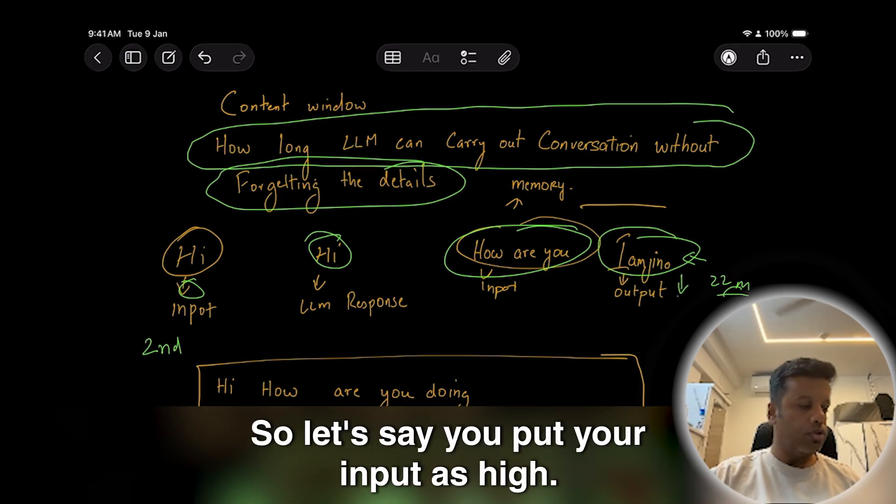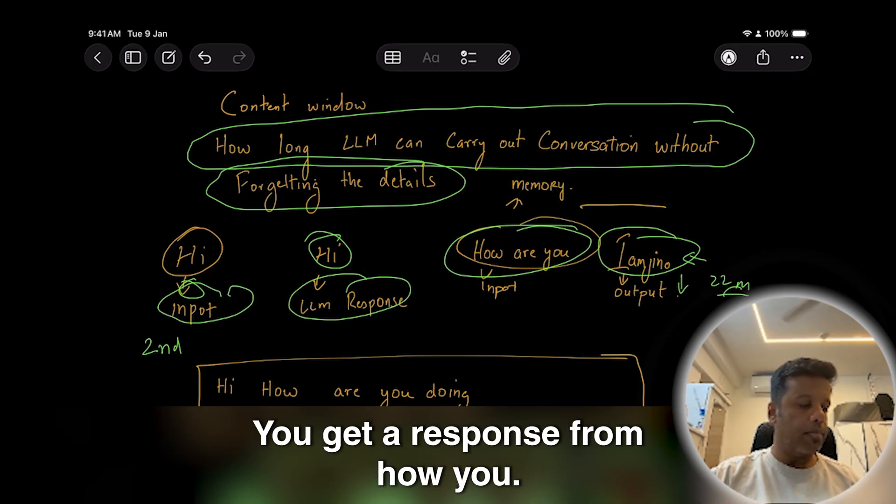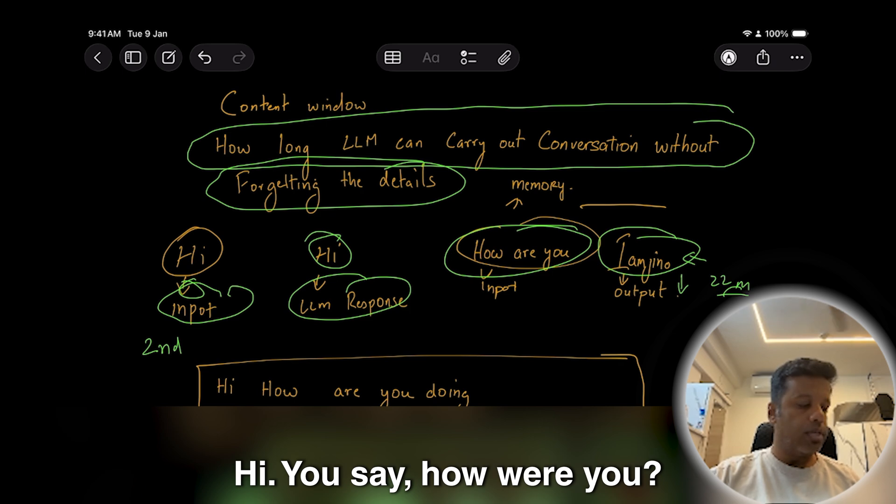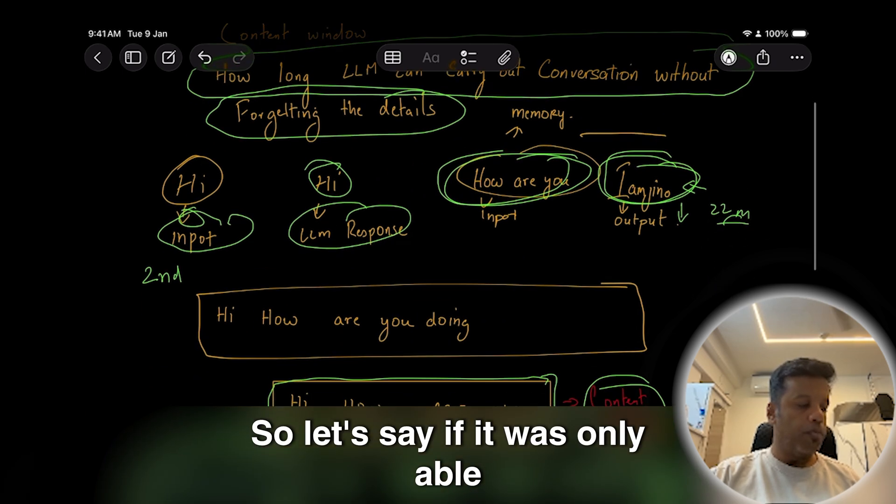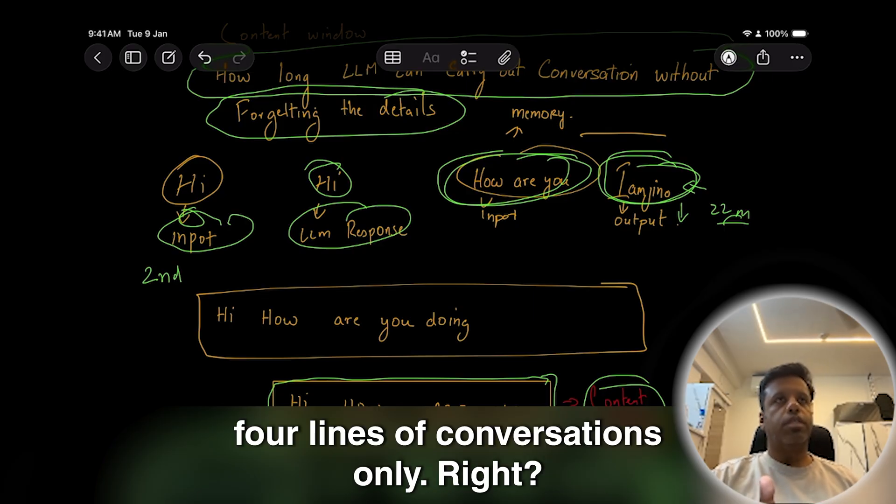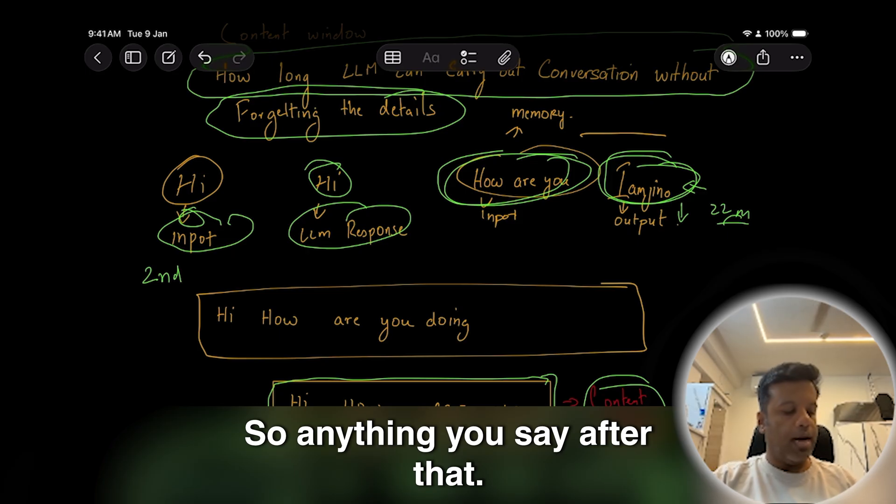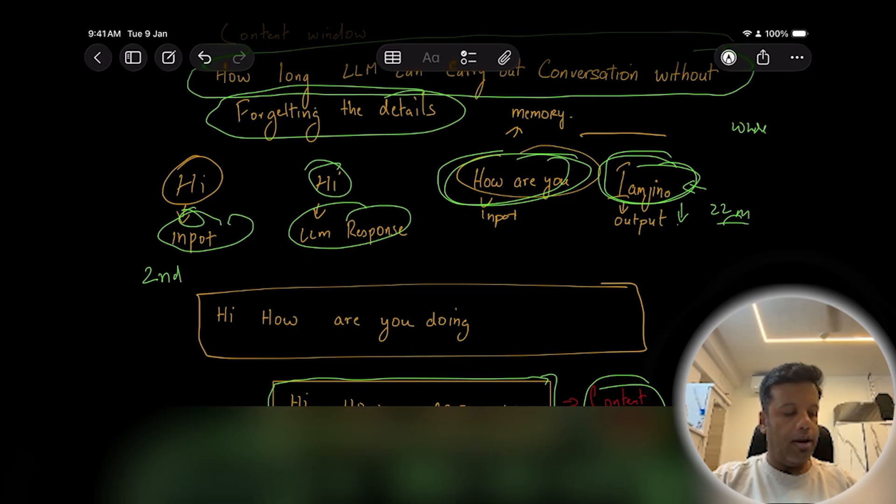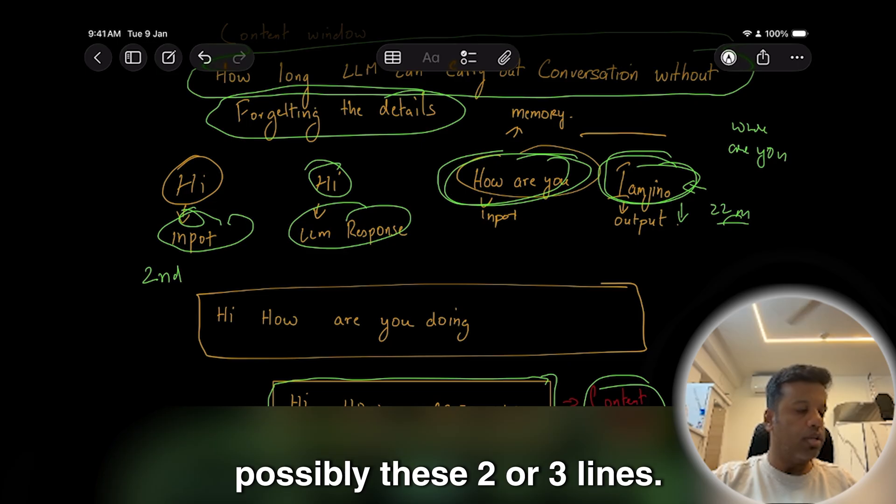Hi, how are you? So let's say you put your input as 'hi,' you get a response from LLM. 'Hi.' You say 'how are you?' And you get a response. 'I'm fine.' So let's say if it is only able to understand one, two, three, four - four lines of conversations only. So anything you say after that, let's say 'where are you?' - it will forget possibly these two or three lines.